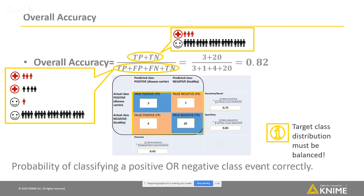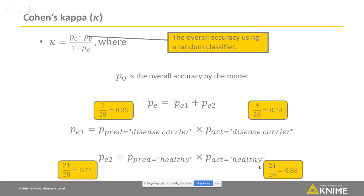If we have one majority class, like in this case where most people are healthy and only a few are disease carriers, and if we then used a random classifier that classified all the events to the majority class — so as healthy — then we would still reach an overall accuracy as high as the proportion of the majority class, so around 80% in this case. Therefore, we need an alternative overall accuracy metric which we can use in the case of an unbalanced target class distribution. And it's called Cohen's Kappa.